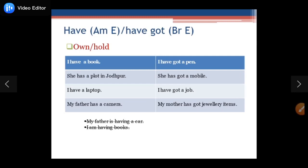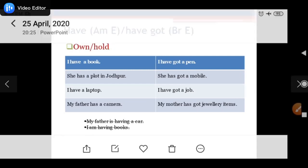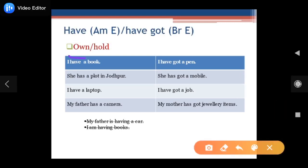Question comes: where do we use 'have' or 'have got'? First of all, own and hold — if something belongs to you or is in your possession, you use 'have' or 'have got.' For example, you have a mobile right now watching this video. You can say: 'I have a laptop' or 'I have got a laptop.' There is no meaning difference. This is what Americans prefer — 'have' — and Britishers prefer 'have got.'